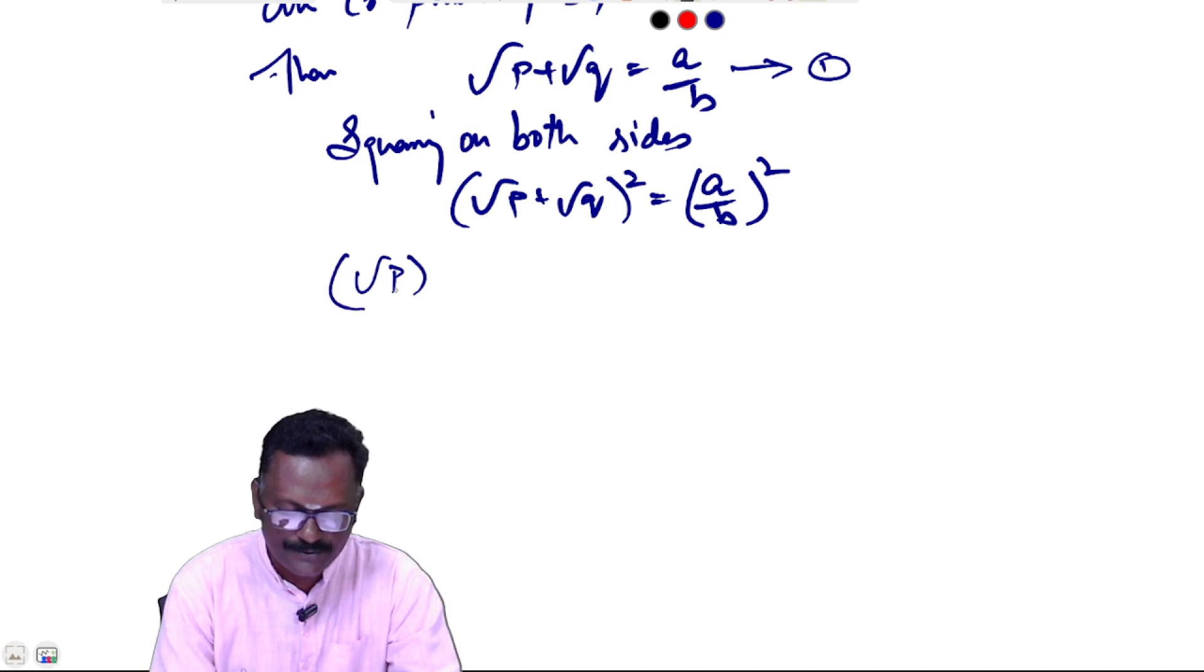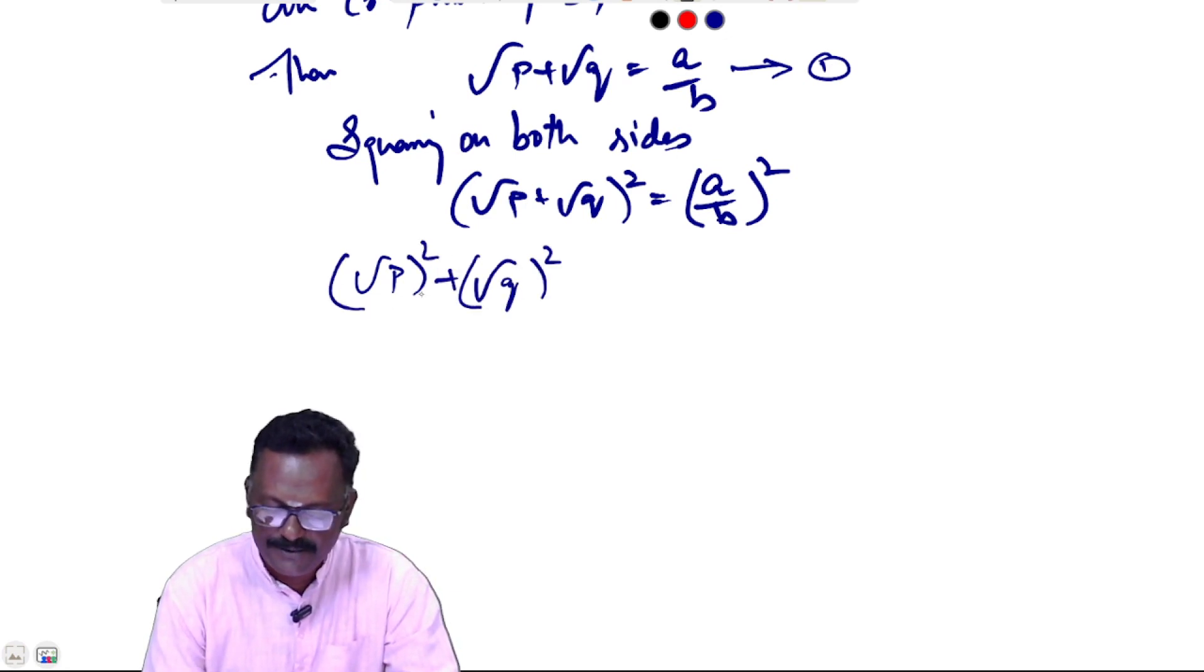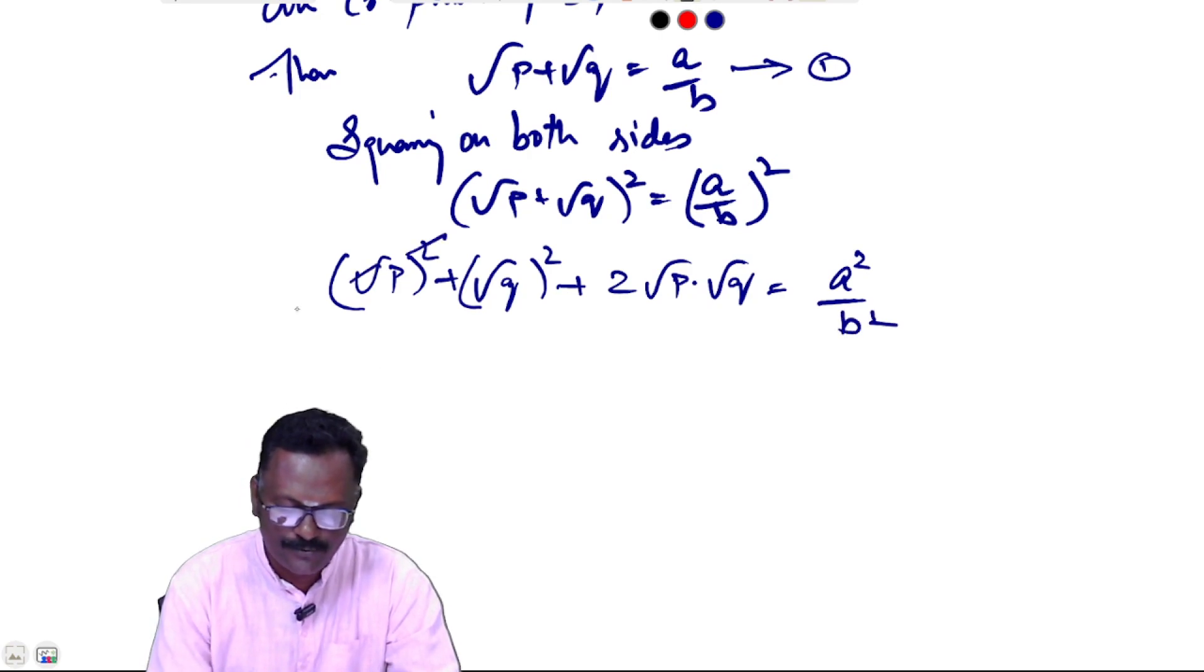We get √p² + √q² + 2√p√q = a²/b². Squares and square roots cancel, so p + q + 2√(pq) = a²/b².